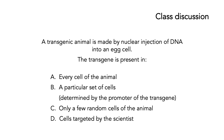Another class discussion. Here you have a transgenic animal made by nuclear injection of DNA into an egg cell. Is the transgene present in: A, every cell of the animal; B, a particular set of cells determined by the promoter; C, only a few random cells; or D, cells targeted by the scientist? The answer is A — every cell of the animal. We start with a single cell and insert the transgene into it. Assuming success, that cell divides and although the entire DNA is copied, so too is the transgene. You end up with daughter cells each containing the original DNA and also a copy of the transgene, so the transgene is present in every cell of the organism.